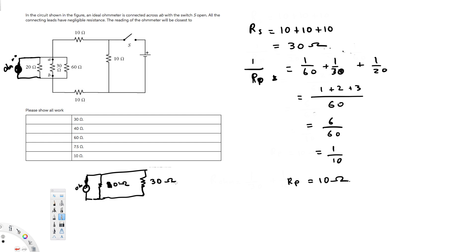Now all you have to do is do the parallel again. The ohmmeter is going to be R ohm. So 1 over R ohm is equal to 1 over 10 plus 1 over 30.